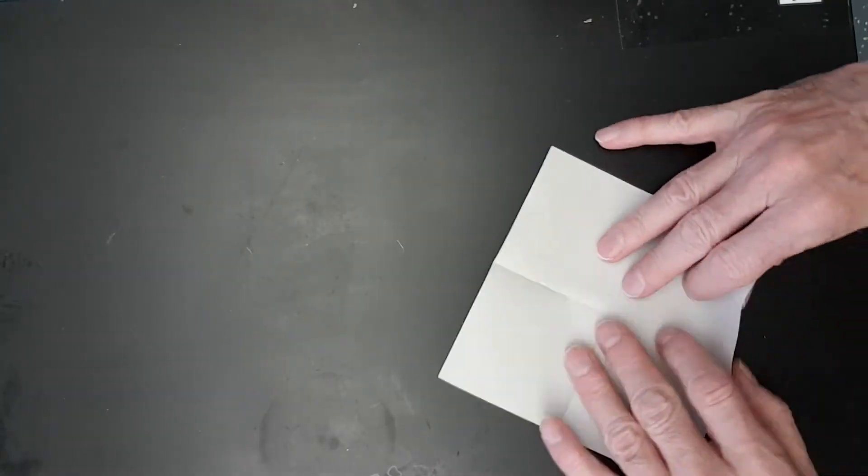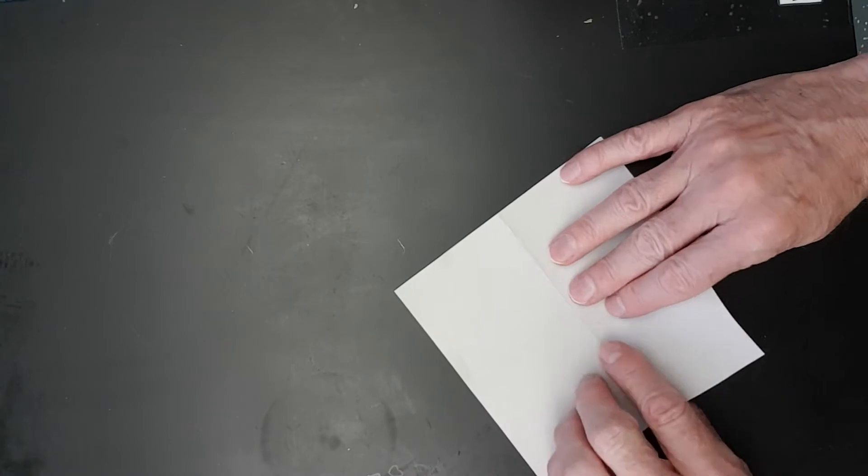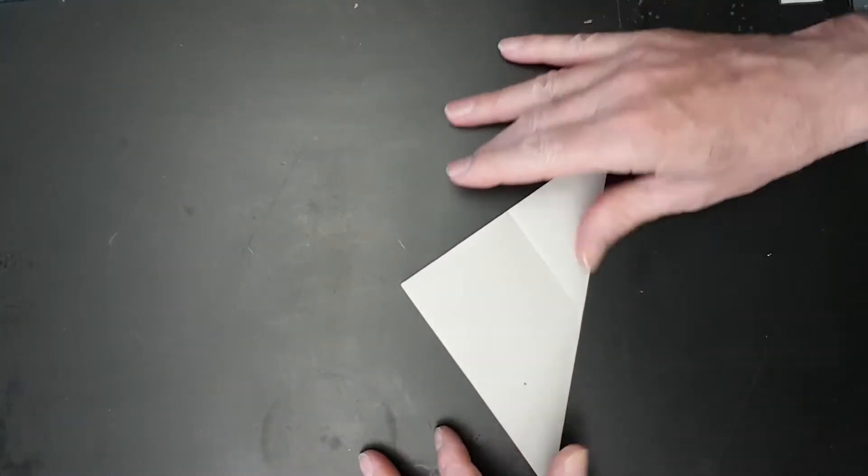Notice though how I'm using my fingernails to sharpen it. We're flipping the paper over because we folded lengthwise that way and we're folding diagonally the opposite direction.